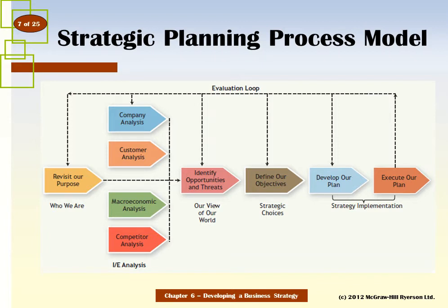Once we've completed the analysis, we can identify opportunities and threats. The next step is defining our objectives — choosing where we want to play — given our understanding of the internal and external markets, the opportunities that exist, and the resources at hand. We then develop our plan, define how we will play the game, and execute it. Importantly, there's an evaluation loop: at each stage we may need to revisit our purpose and analysis, monitoring our success and reevaluating as we go forward.